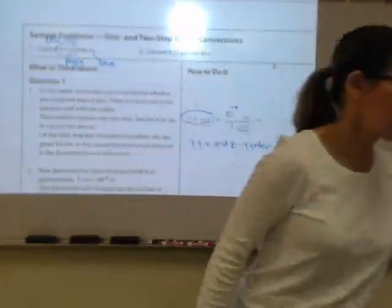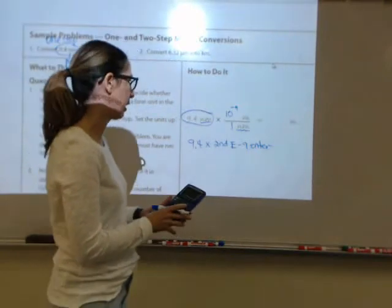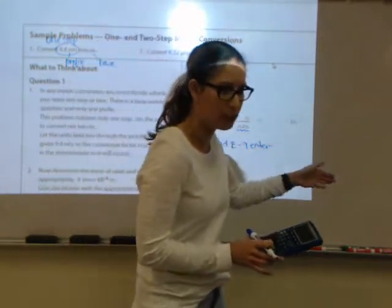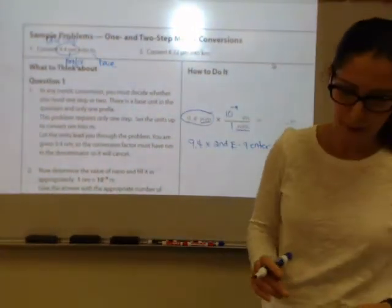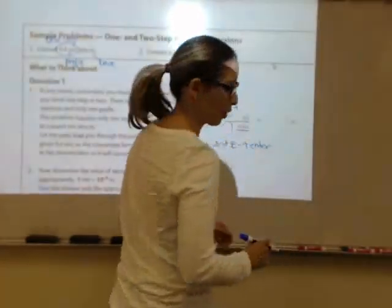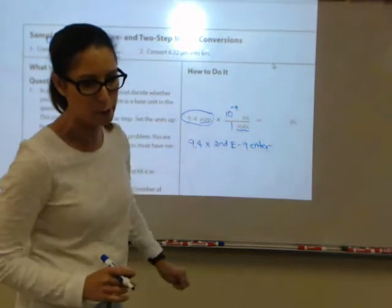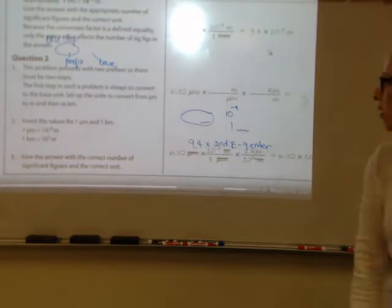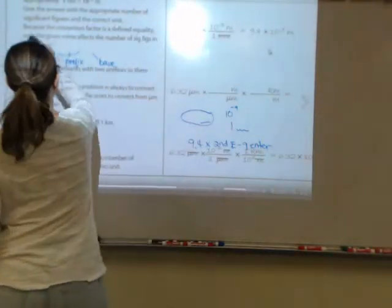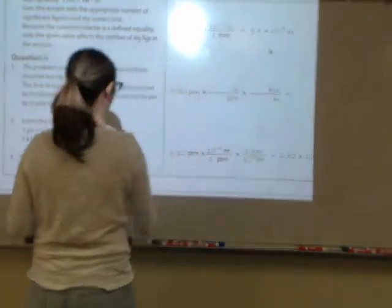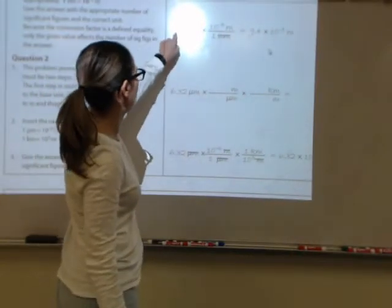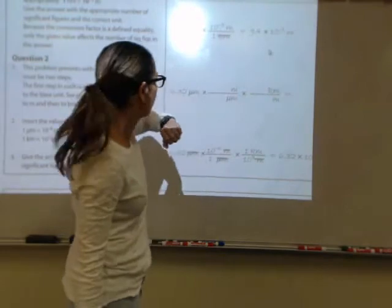On your calculator, the 2nd EE button — 2nd is upper left, EE is above the 7 on the comma key. Press it once and E appears. The answer is 9.4 × 10⁻⁹ meters. You started with two significant figures, so you end with two. The number one and the corresponding power of 10 are exact defined quantities in the metric system, giving them infinite sig figs — that's why the two sig figs of 9.4 determine the final answer.